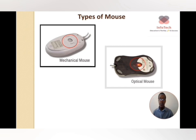The mechanical mouse has a rubber ball underneath, which makes it hard to move along rough surfaces — it can cause a delay and the cursor won't move effectively. You have to use it on a flat surface. However, the optical mouse uses an LED (light emitting diode) or laser and is able to move on any surface, whether rough or smooth, and will still move your cursor effectively.